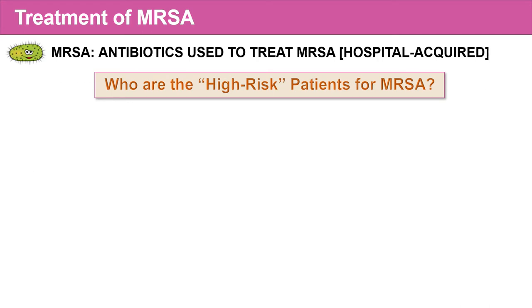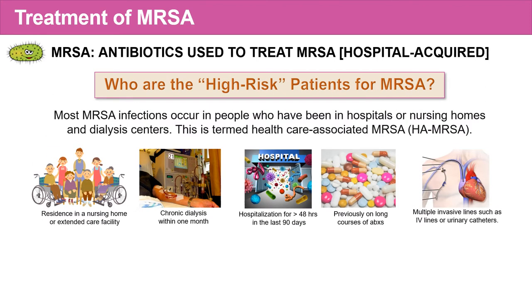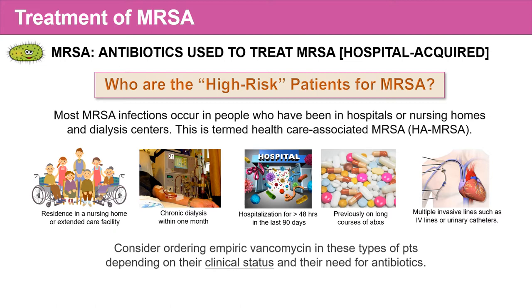Who are these high-risk patients for MRSA? Most MRSA infections occur in patients who have been in the hospital, nursing homes, or dialysis centers — called healthcare-associated MRSA, or HA-MRSA. This includes patients in nursing homes or extended care facilities, patients receiving chronic dialysis within one month, patients hospitalized for greater than 48 hours in the last three months, patients previously on long courses of antibiotics, and patients who have or currently have multiple invasive lines such as IV lines or urinary catheters. In these patients, we should consider ordering empiric vancomycin depending on their clinical status.